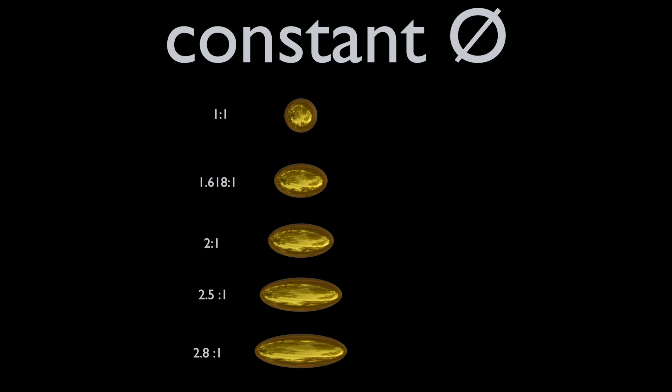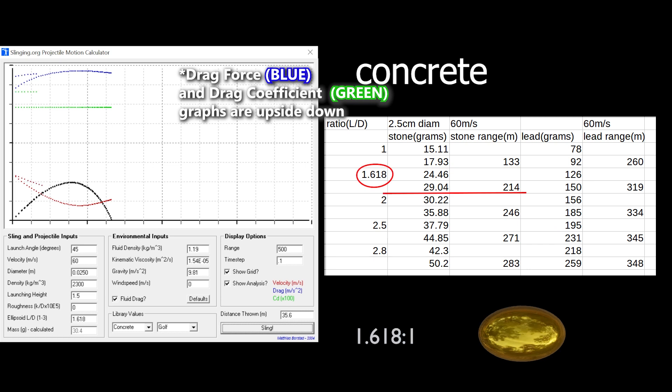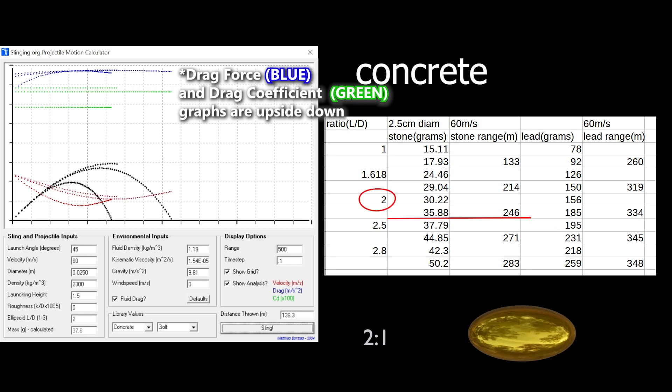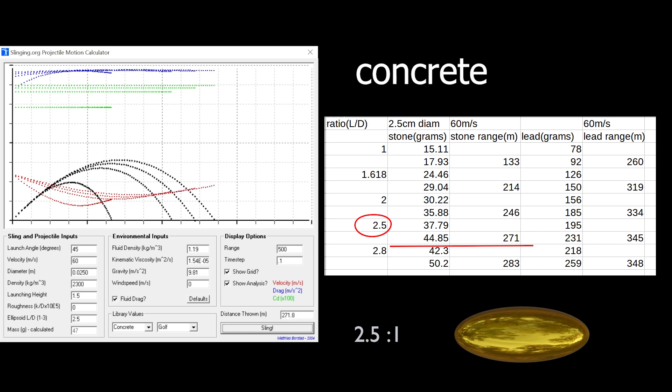To get an idea of the effects of density, shape, and roughness on drag, I will run simulations on the SlingSim app. This is the only simulator I know of that includes roughness input and graphs the velocity and drag.